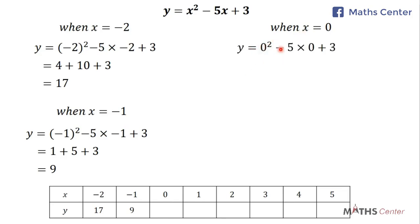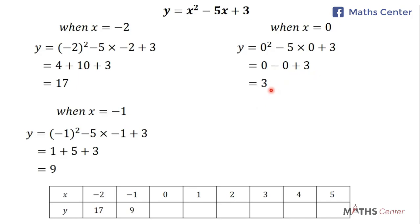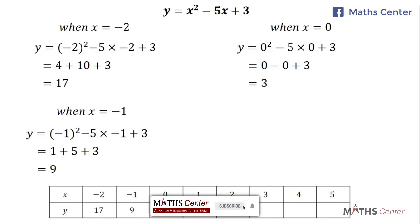The next x value is 0. Since 0 is not a negative number, you can choose whether or not to put it in brackets. y = 0² - 5 × 0 + 3 = 0 - 0 + 3 = 3. When x = 0, y = 3.